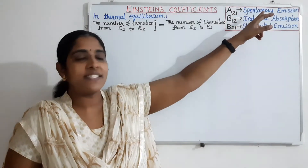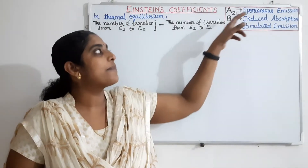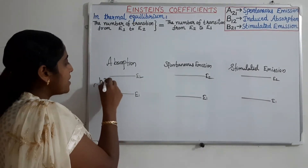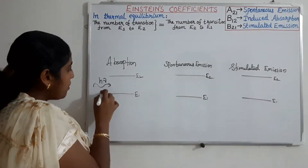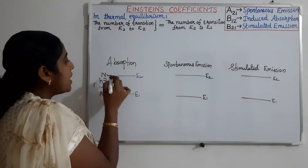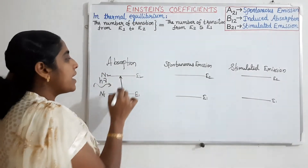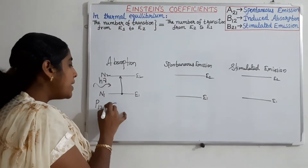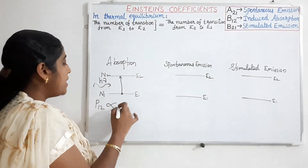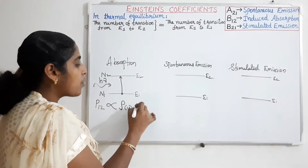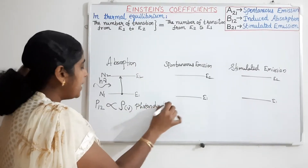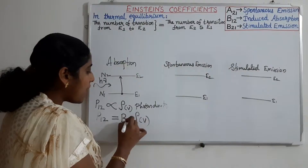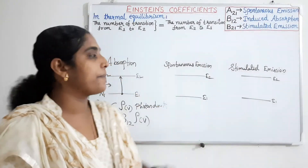A21 corresponds to spontaneous emission, B12 corresponds to induced absorption, and B21 corresponds to stimulated emission. In absorption, when a photon of energy hν is incident on a system with energy levels E1 and E2, having number of atoms per unit volume as N1 and N2, an atom in the lower level is excited to the higher energy level by absorbing this photon. The probability of this absorption depends upon the number of photons per unit volume — that is, B12 is proportional to ρν, where ρν is the photon density. So B12 equals a constant times ρν, and that constant is known as Einstein's coefficient of induced absorption.